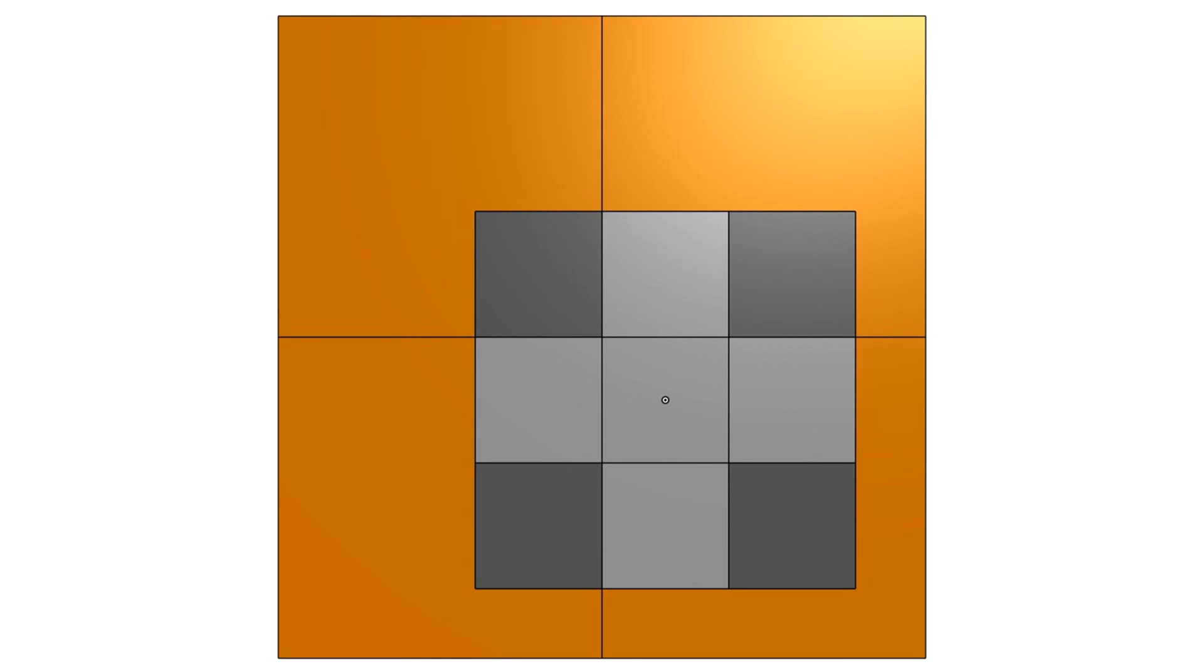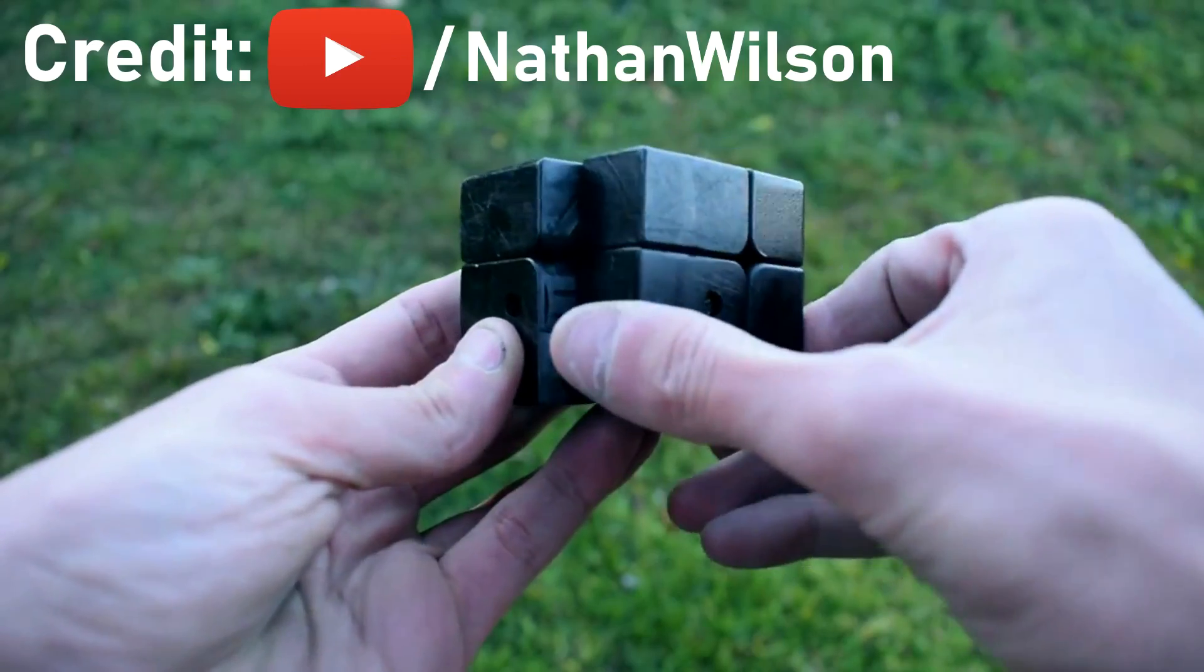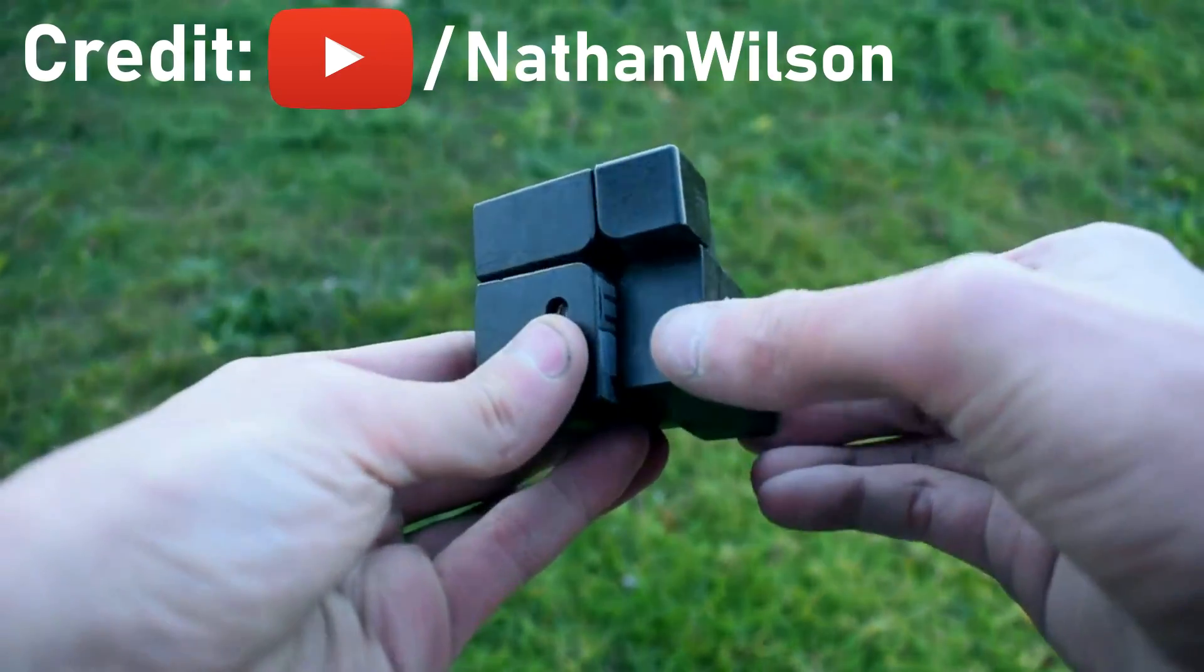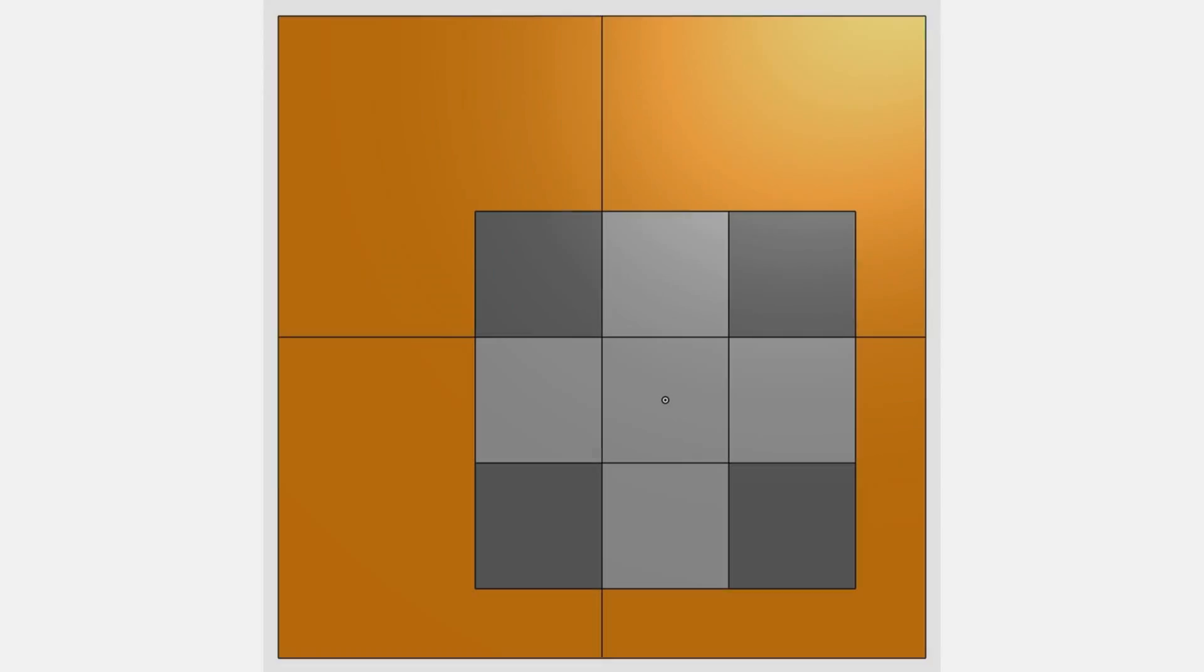When designing this puzzle, I thought, what if I offset the cuts so that this symmetry no longer exists? So I offset the cuts equally on all three axes. Now I had a design that would have turned just like Nathan Wilson's unscramblable cube, which as I'm sure you can tell by the name, can't be scrambled.